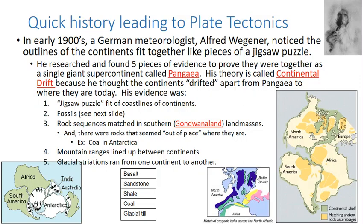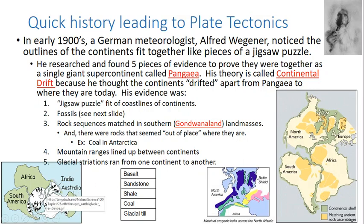His third piece of evidence was rock sequences. He found a specific sequence: basalt on top of sandstone, on top of shale, on top of coal, on top of glacial till. He looked at the five southern landmasses, which are called Gondwana or Gondwanaland — South America, Africa, India, Australia, and Antarctica — and found this same rock sequence on all five of them. They might have had different amounts of these rocks, but they were the same rocks in the same order, so it made sense that they were all together when the rocks were laid down.